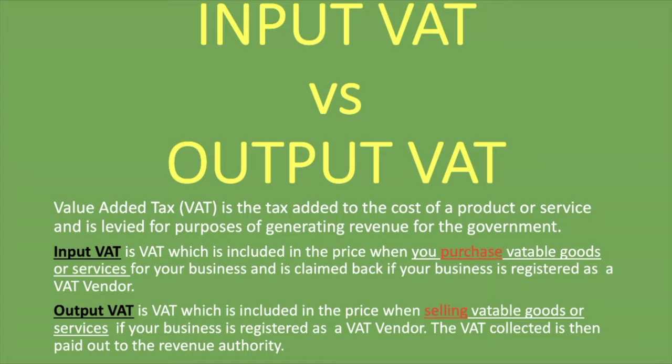The VAT collected is then paid out to the revenue authority. Not all goods and services are subject to VAT — some are zero-rated and some are exempt. But those which are not exempt, which would be most goods and services, would be subject to VAT — these are the VATable goods and services.